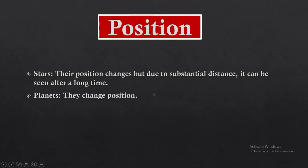Regarding position: stars' position changes, but due to their substantial distance, the change can only be seen after a long time. Stars move in separate orbits at high speed, but their movement only becomes apparent after a long time, because planets also change their position as they are in the sky.